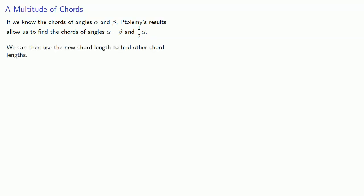If we know the chords of angles alpha and beta, Ptolemy's results allow us to find the chords of angles alpha minus beta and one-half alpha. We can then use the new chord length to find other chord lengths.